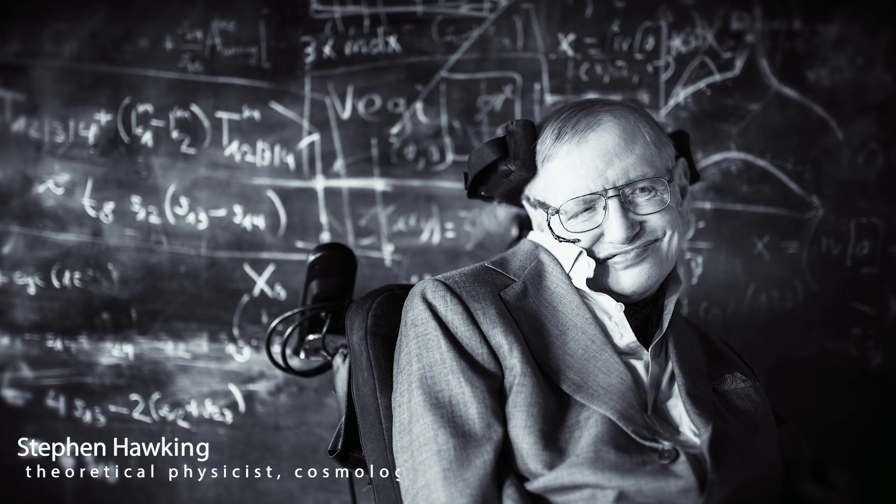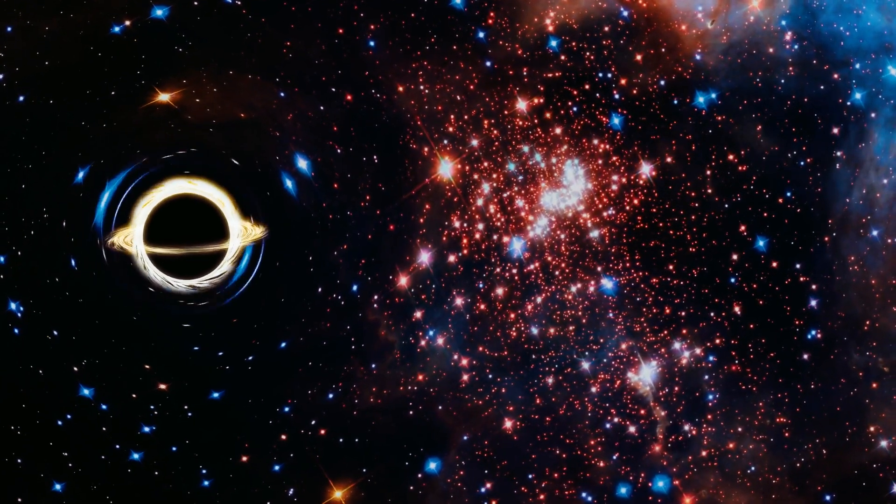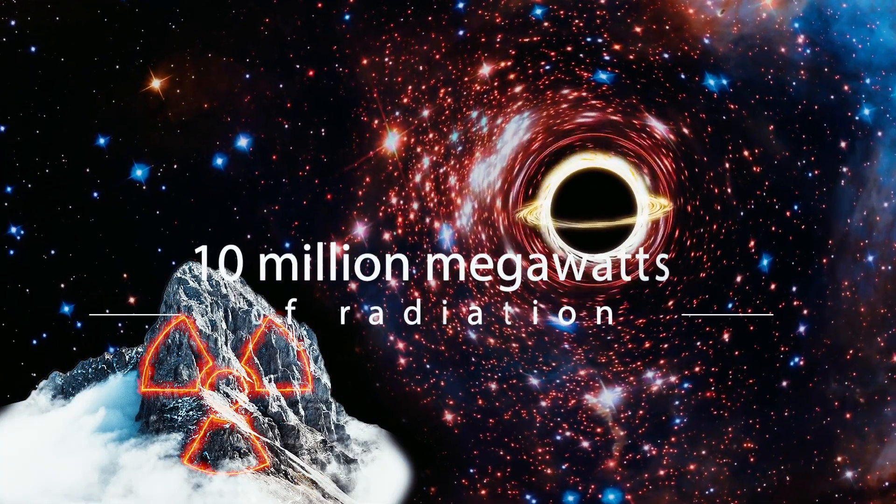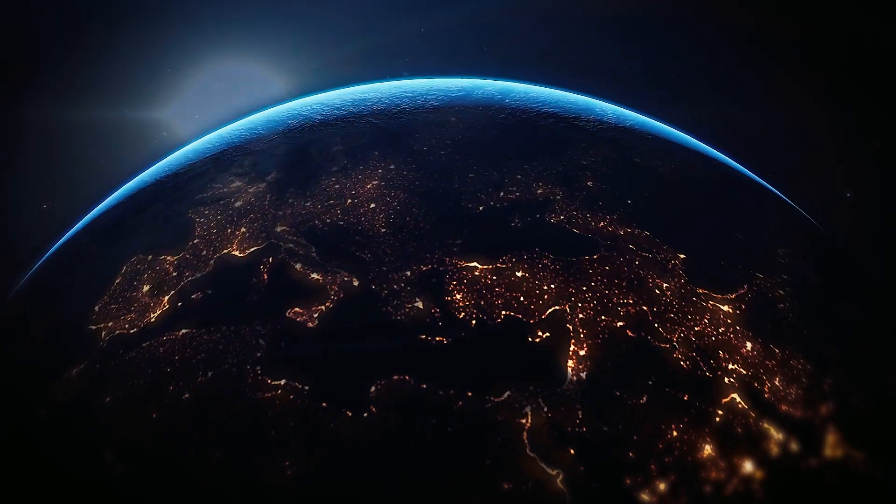Stephen Hawking had proposed using a black hole, albeit a smaller one, as a potential source of energy. A black hole with the size of a mountain could generate approximately 10 million megawatts of radiation, enough to power the entire world.